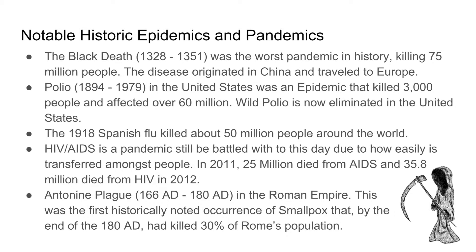On to the next part: notable historic epidemics and pandemics. The Black Death was one of the worst pandemics in history — it killed over 75 million people. Polio was an epidemic in the United States that killed 3,000 people and affected over 60 million people. The 1918 Spanish flu killed about 50 million people around the world. HIV/AIDS is a pandemic still ongoing to this day, having killed over 25 million people in 2011 and 36 million people in 2012. The Antonine Plague was in the Roman Empire and was the first noted occurrence of smallpox, killing 30% of Rome's population.